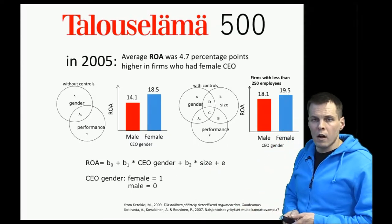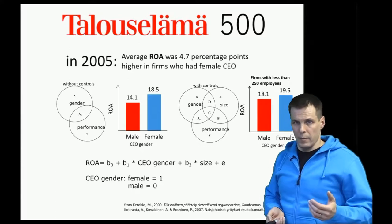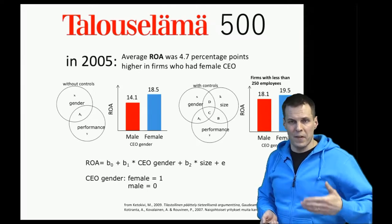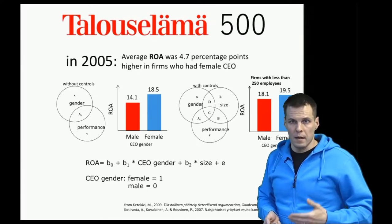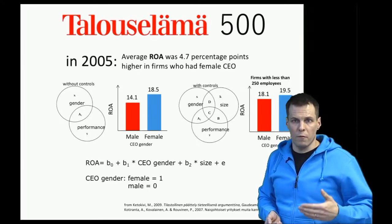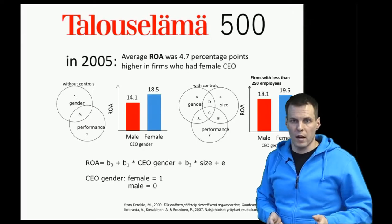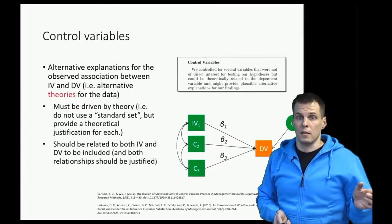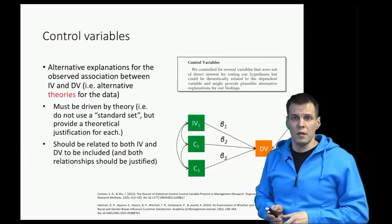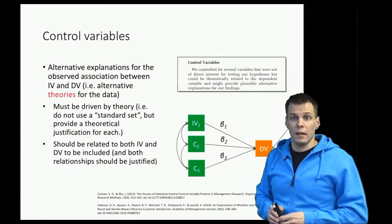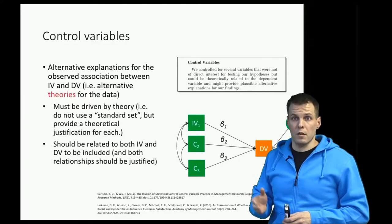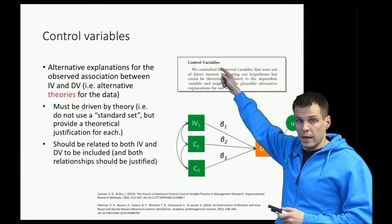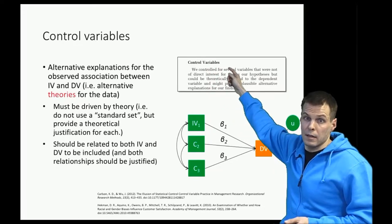Regardless of how we actually implement statistical controlling, we need to decide which factors we need to control for — and those factors are called control variables. Control variables are present in nearly every study in business research. It's quite common that you see a section in a paper explicitly labeled as 'control variables,' like here in Heckman's paper that we use as an example.